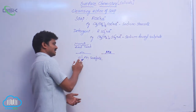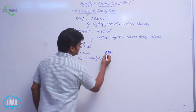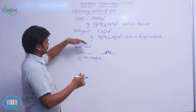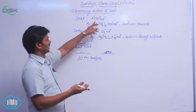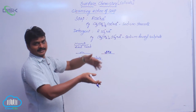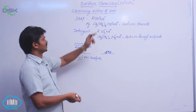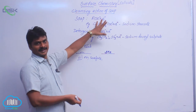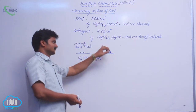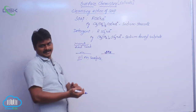Fat or oil is non-polar. The soap ions — R COO⁻ Na⁺ — when dissolved in water dissociate into soap anions and cations. These anions are attracted by oil or fat.